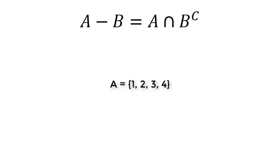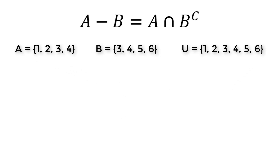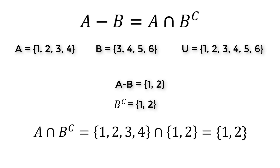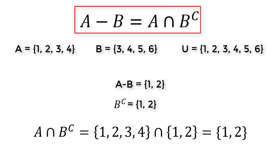Suppose A is {1, 2, 3, 4}, B is {3, 4, 5, 6}, and the universal set is {1, 2, 3, 4, 5, 6}. Then A difference B is {1, 2}, and B complement is {1, 2}. The common elements of A and B complement are {1, 2}. That means A difference B is equal to A intersection B complement.